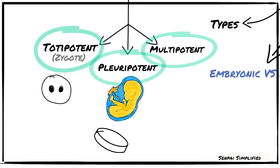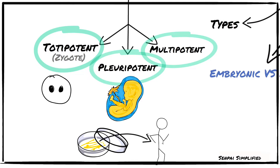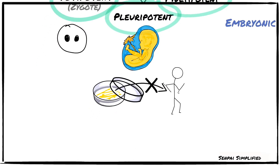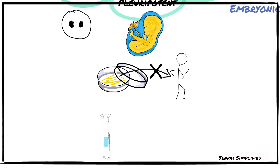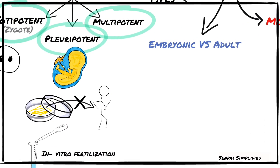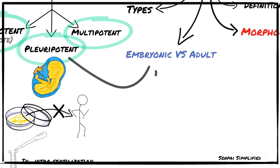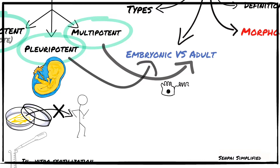Embryonic stem cells can be grown easily in calcium media, but they have a high transplant rejection rate. These cells are used in in vitro fertilization in clinics and for research.